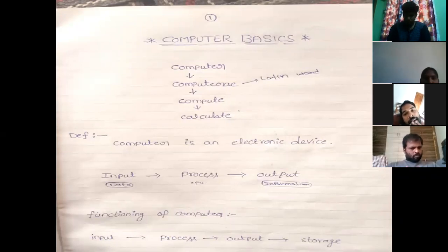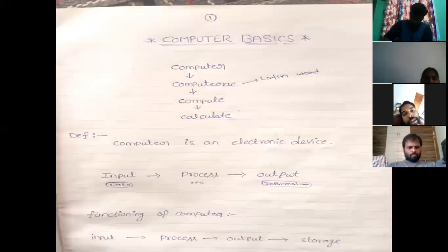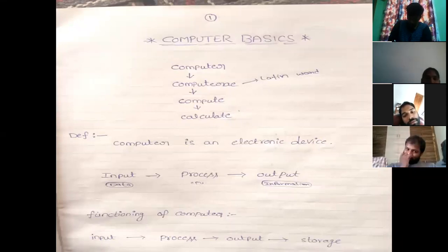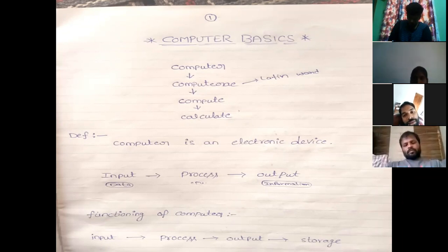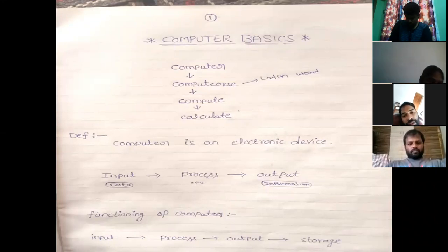A computer is an electronic data processing device which can accept data as input, process it, and give the desired output. Input is processed by the CPU and output is produced.